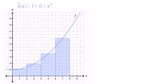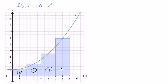What I want to do in this video is get a little bit of practice trying to approximate the area under curves and also get a little bit more familiarity with sigma notation in this context. We have the graph of f of x is equal to one plus zero point one x squared, and rectangles approximating the area under the function f between x equals zero and x equals eight. The way we're attempting to do it is by splitting it into four rectangles — rectangle one, rectangle two, rectangle three, and rectangle four — each with a width of two.